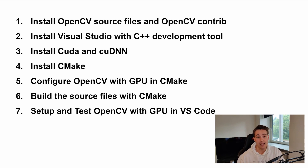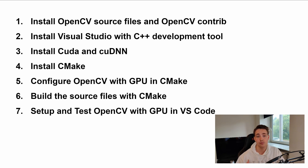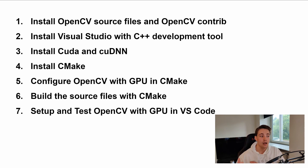We'll use the NVIDIA CUDA drivers to enable OpenCV with our GPU. Then we'll install CMake, which we'll use to build OpenCV from source files with GPU support — we can specify options like FastMath, release mode, debug mode, and so on. Then we'll configure OpenCV with GPU in CMake, build the source files, and finally set up and test OpenCV with GPU support in Visual Studio Code.